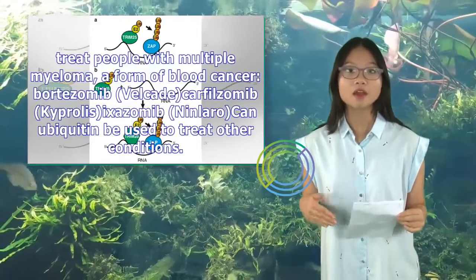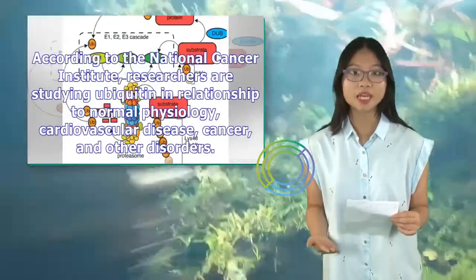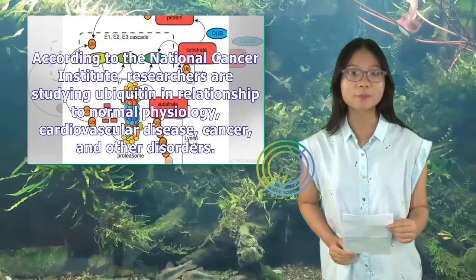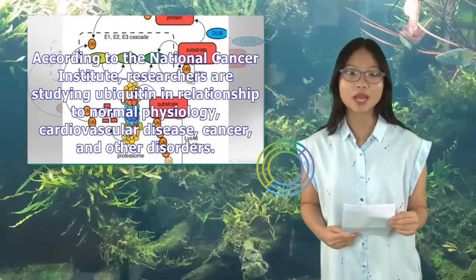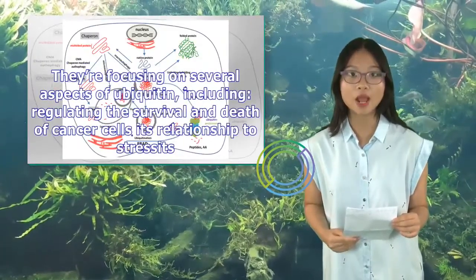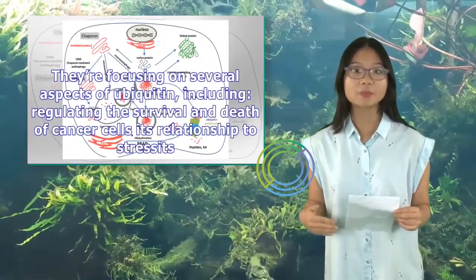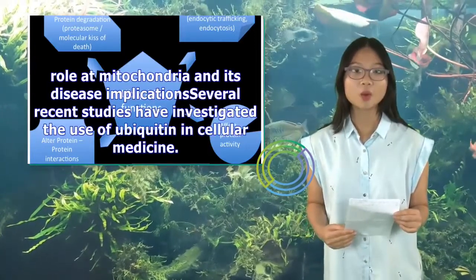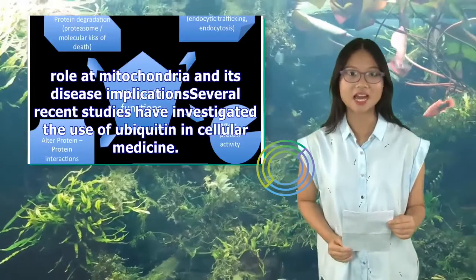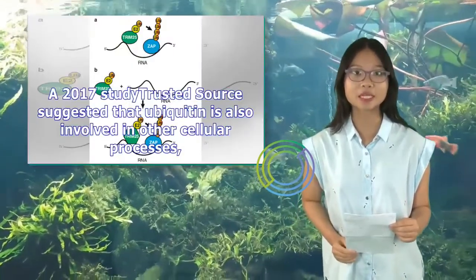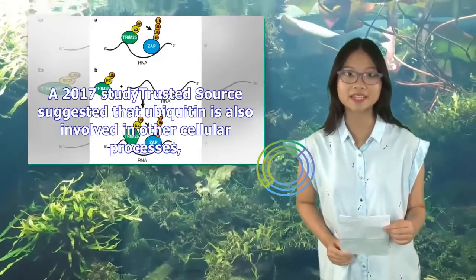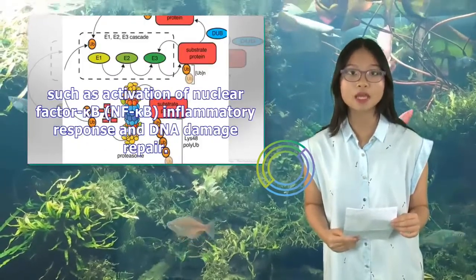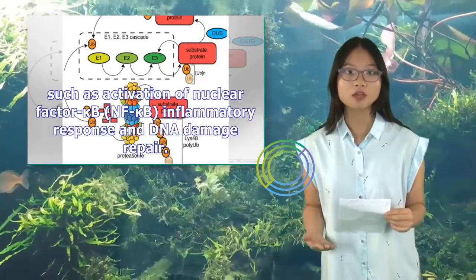Can ubiquitin be used to treat other conditions? According to the National Cancer Institute, researchers are studying ubiquitin in relationship to normal physiology, cardiovascular disease, cancer, and other disorders. They're focusing on several aspects of ubiquitin, including regulating the survival and death of cancer cells, its relationship to stress, and its role at mitochondria and its disease implications. A 2017 study suggested that ubiquitin is also involved in other cellular processes, such as activation of nuclear factor kappa B (NF-kappa B), inflammatory response, and DNA damage repair.